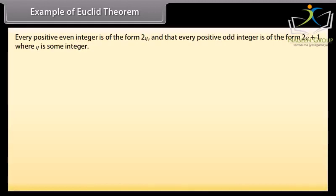Example of Euclid theorem. Let us now prove that every positive even integer is of the form 2Q, and that every positive odd integer is of the form 2Q plus 1, where Q is some integer.